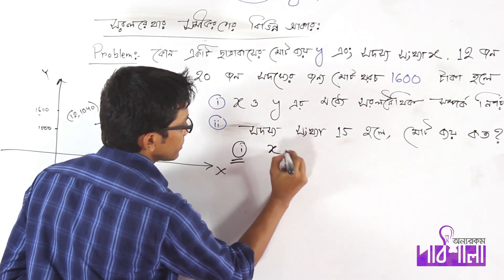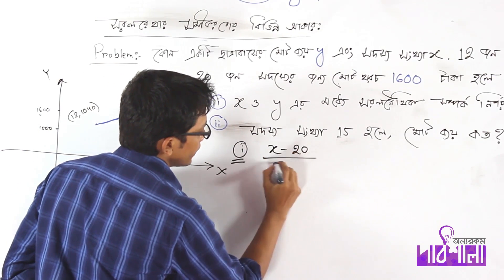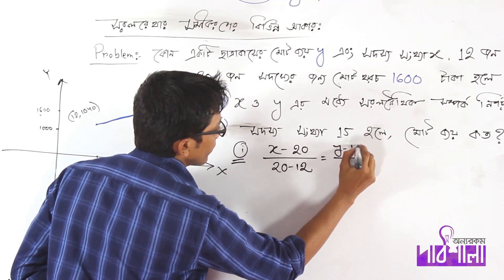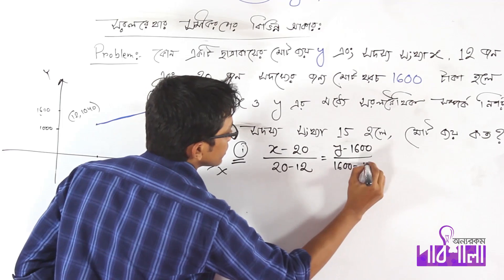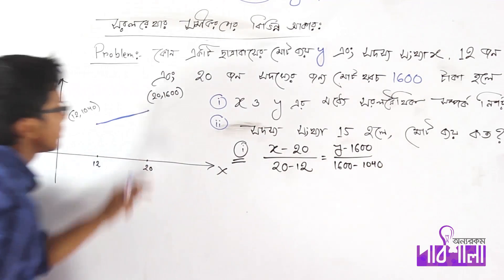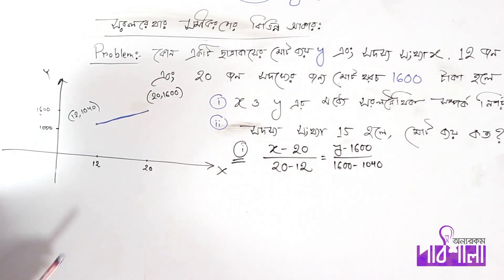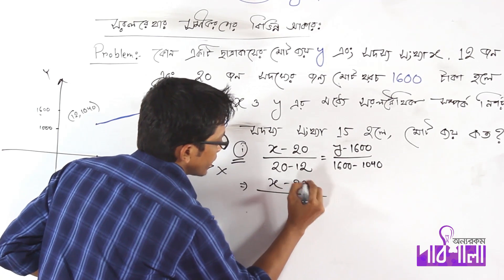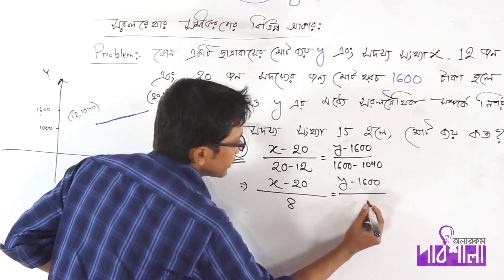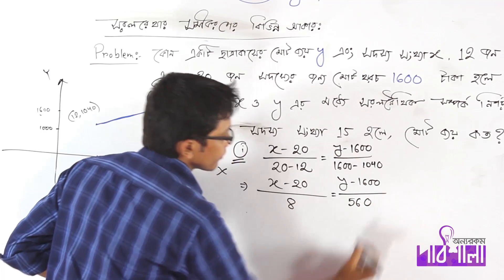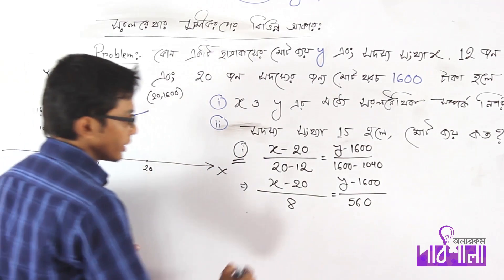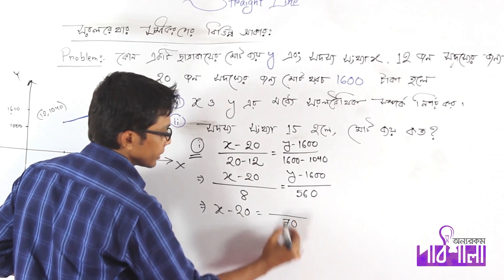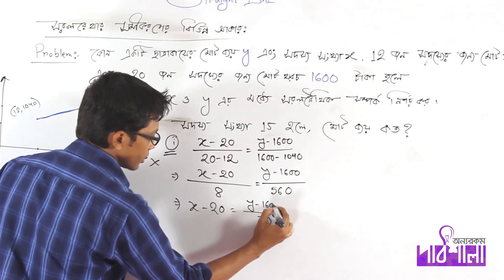x minus x1 over x1 minus x2 equals to y minus y1 over y1 minus y2. So we have to cut out the same thing. x minus 20 equals to 1 minus 0. So we have to cut out the same thing. y minus 0.